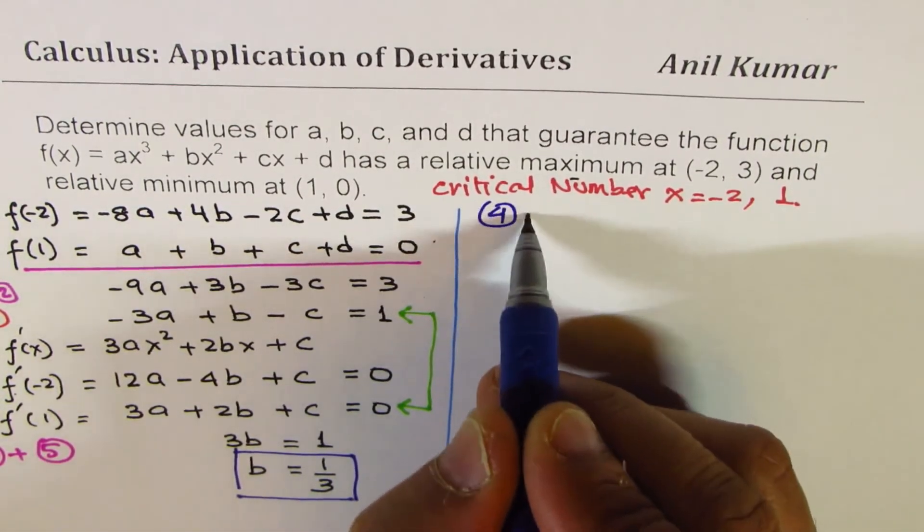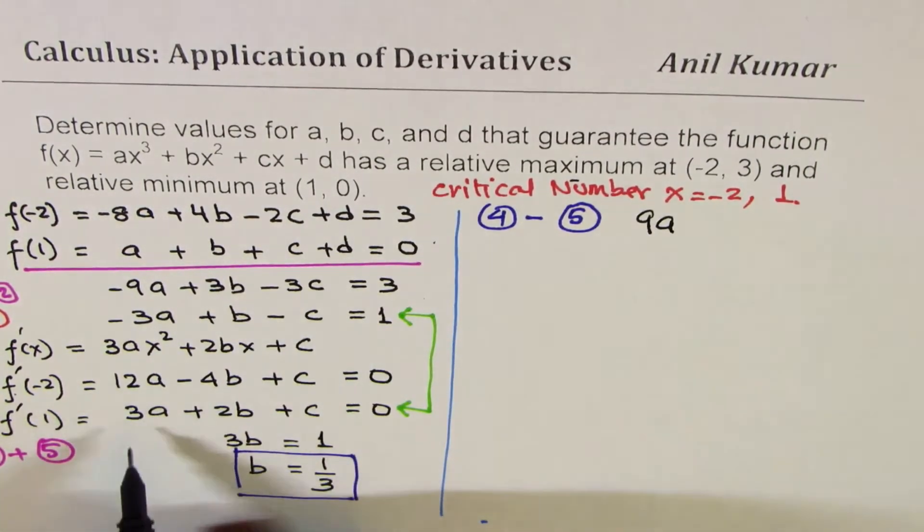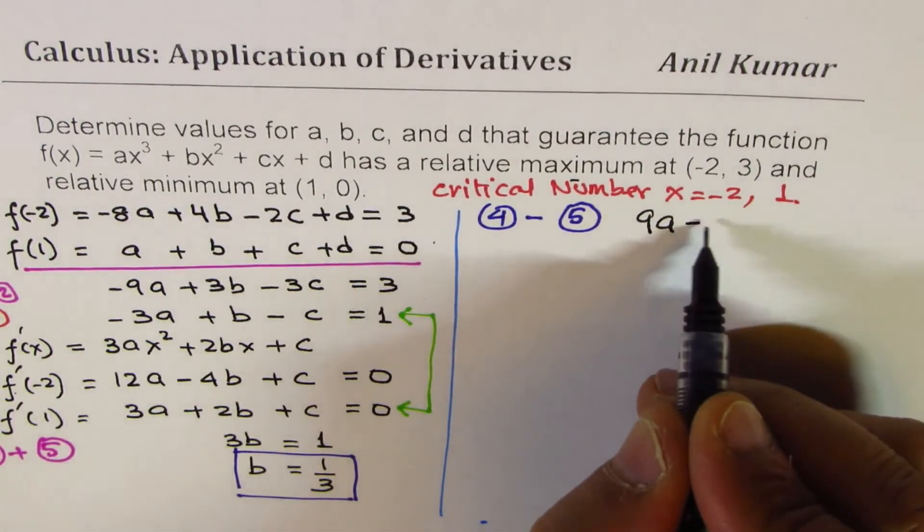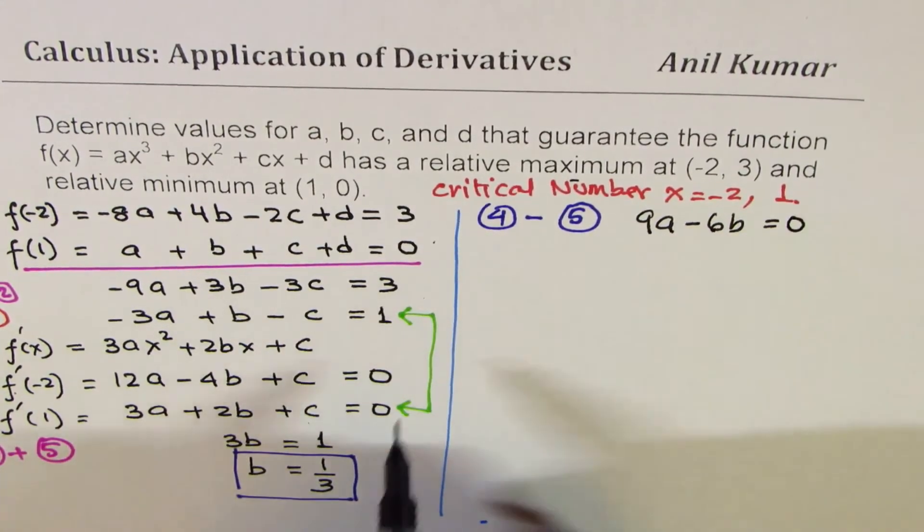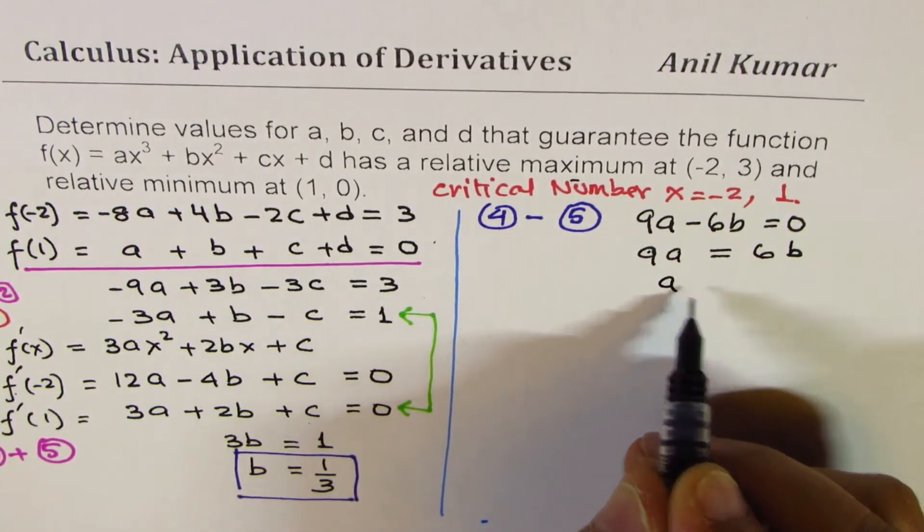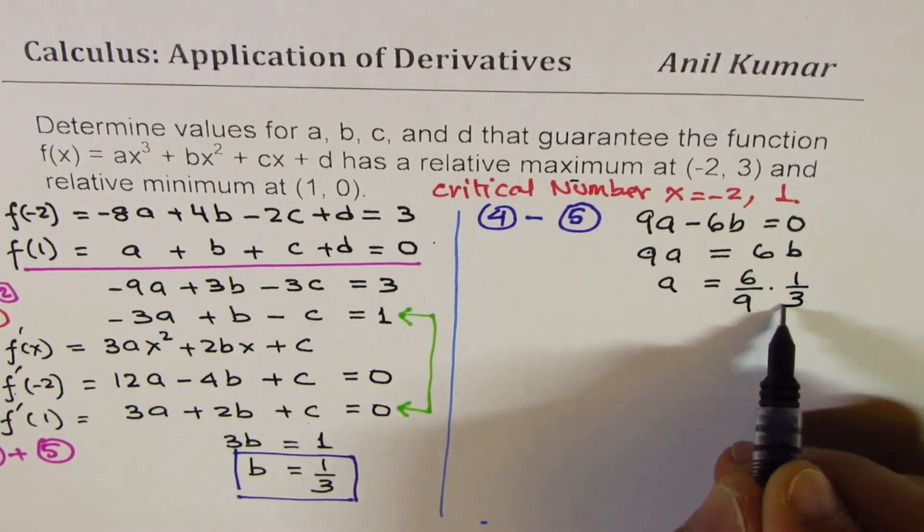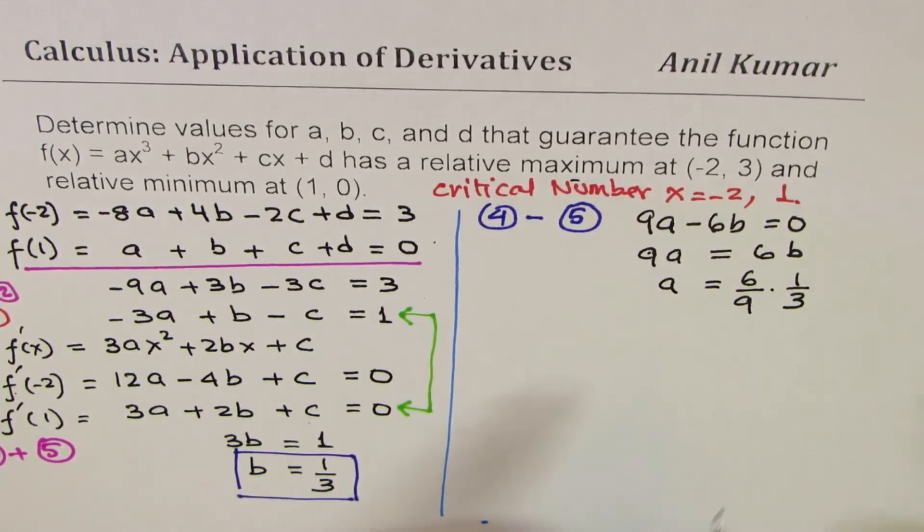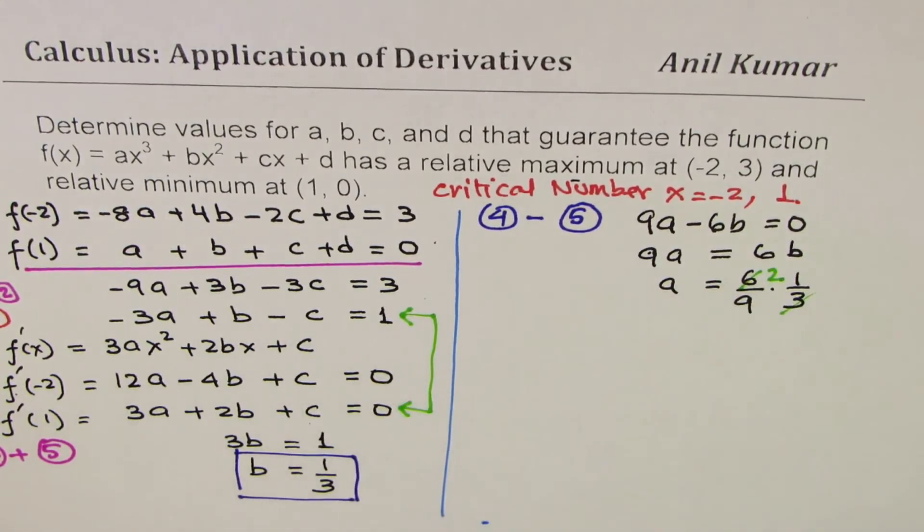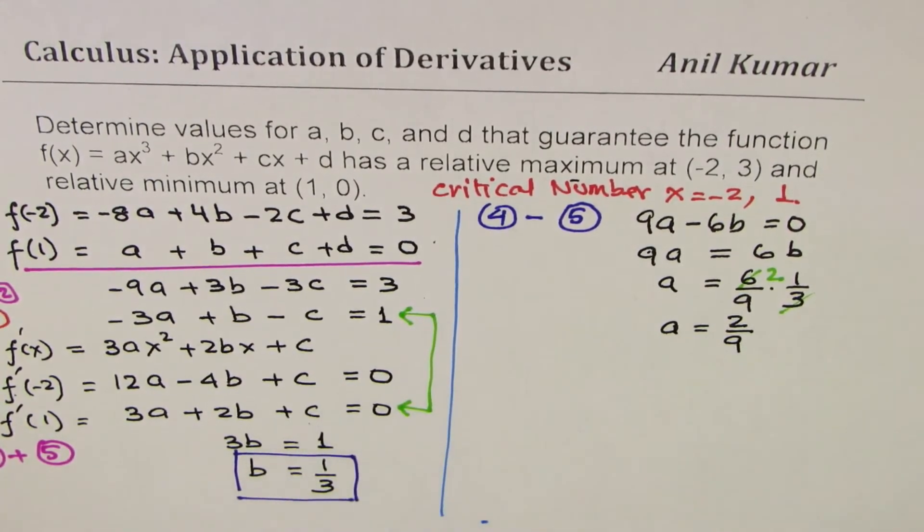So let's do equation 4 take away equation 5. So 4 take away 5, 12 take away 3 is 9. So we get 9a - 6b, c is cancelled out equals to 0. So we can find what a is. So we get 9a = 6b and a = 6/9 times b and b is 1/3. So that gives us, it goes 2 times, so a is 2/9. Let's highlight this.